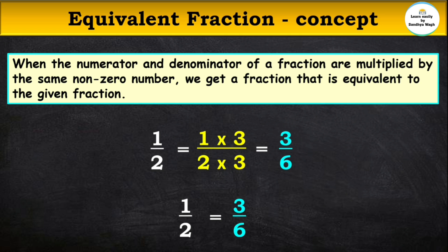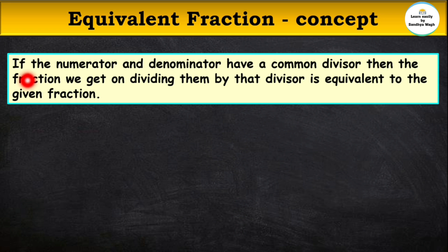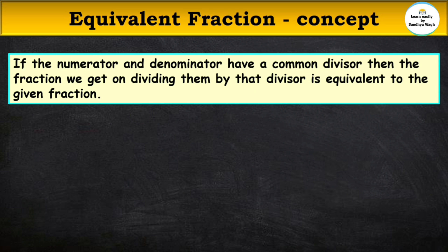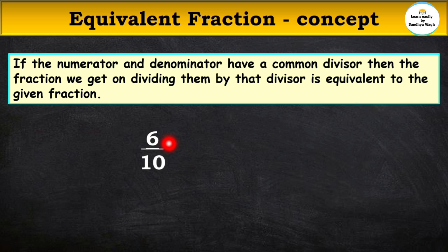Can we get an equivalent fraction by dividing the numerator and denominator by the same number? Yes. If the numerator and denominator have a common divisor, then the fraction we get on dividing them by that divisor is equivalent to the given fraction. For example, take 6 upon 10 — what is the common divisor of 6 and 10?